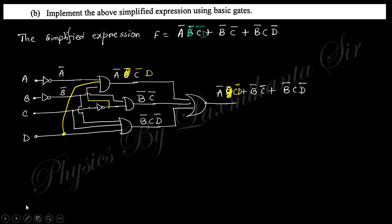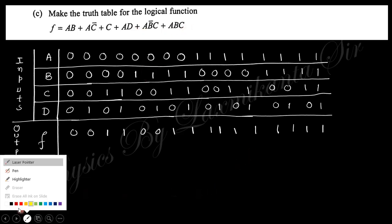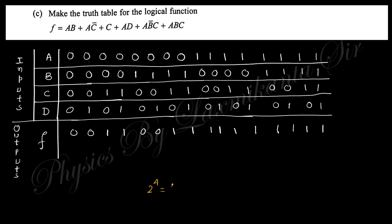Next, make the truth table for the following logic function. You can see there are four variables A, B, C, and D, so there are 2 to the power 4 equals 16 input combinations. Set up the table with 8 zeros then 8 ones for A, 4 zeros 4 ones repeating for B, 2 zeros 2 ones repeating for C, and alternating 0 1 for D.